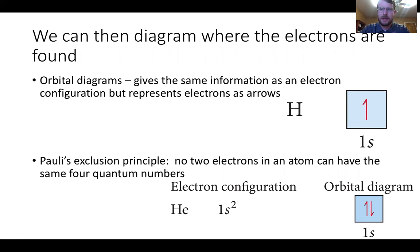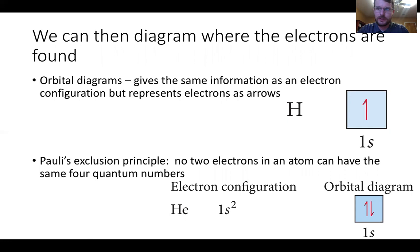Helium has two electrons. In the electron configuration, it's just the elemental symbol, then N — the energy level — so one, then the shape or orbital that it's filling, S, and then how many electrons there are as a superscript. So it's 1s2. The S orbitals can only have two electrons. P can have up to six, and D can have up to ten.